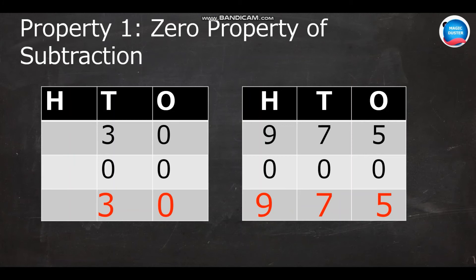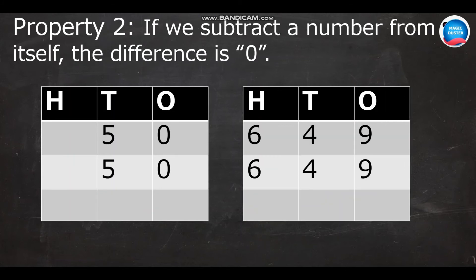Property two: if we subtract a number from itself, the answer is zero. Let us see how it works. Here, I have fifty toys and someone takes away all fifty toys. So, the answer is zero. Again, guess the answer: six hundred and forty-nine subtracted from six hundred and forty-nine. What would be the answer? Yes, zero again. So, when we subtract any number by itself, we will receive the difference as zero.